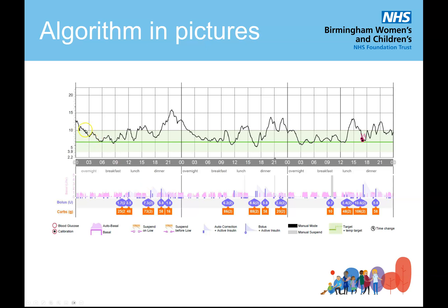Here it is in pictures. Across the top we have the sensor glucose level, the target in green, and a target range between 4 and 10. The sensor glucose level goes across the day, and here is where actual finger pricks or entries of glucose are put into the system. Below that, you can see the basal insulin and the auto corrections — in pink is the auto basal going up and down across the day, and in blue are the auto corrections. After a meal bolus — for example 48 grams of carbs, 3.5 units of insulin — you can see a shaded area showing the active insulin time, representing how long the pump thinks the insulin from the meal bolus is lasting.